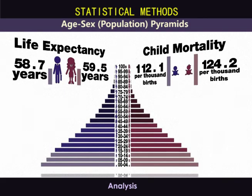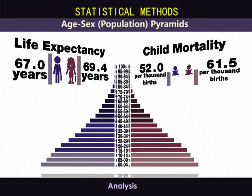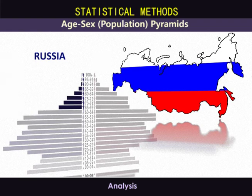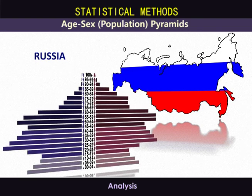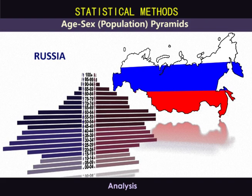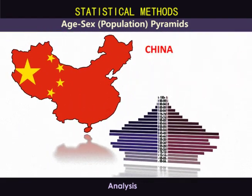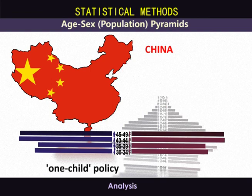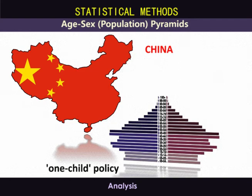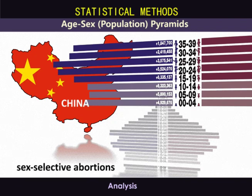A population pyramid is not only a predictor of a country's future, but also a record of its past. Russia's population pyramid still bears the scars of World War II, which explains both the fewer numbers of elderly men compared to elderly women and the relatively sudden population increase as soldiers returned from war and normal life resumed. China's population pyramid reflects the establishment of the one-child policy 35 years before, which prevented population growth such as that of Kenya, but also led to sex-selective abortions resulting in more male children than female children.